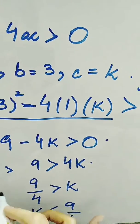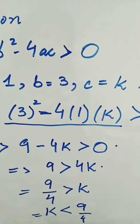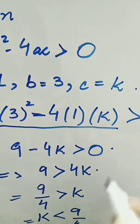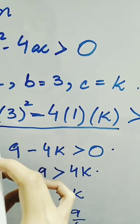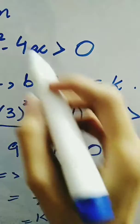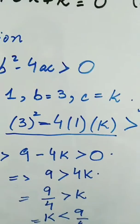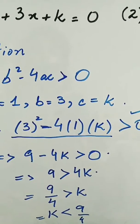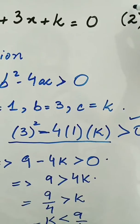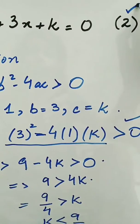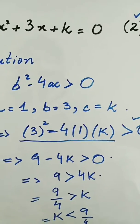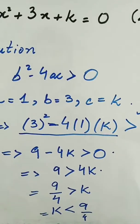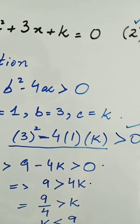This is the correct value of k because for 2 roots, b squared minus 4ac must be greater than 0. This is achieved only when k is less than 9 over 4, ensuring the discriminant expression remains positive.